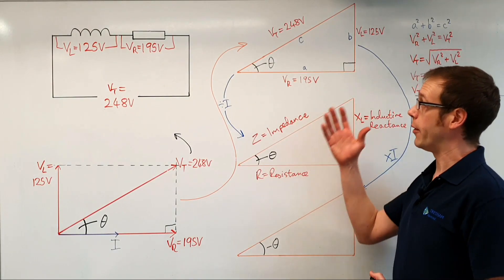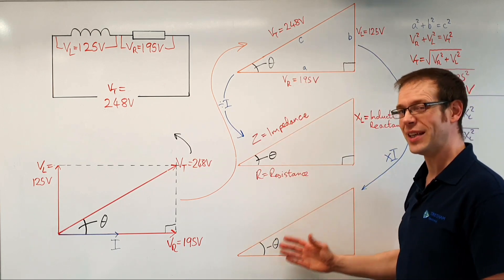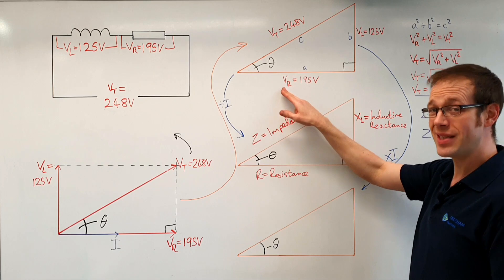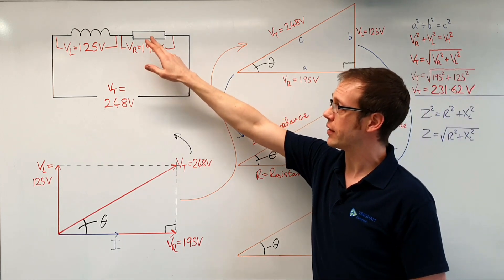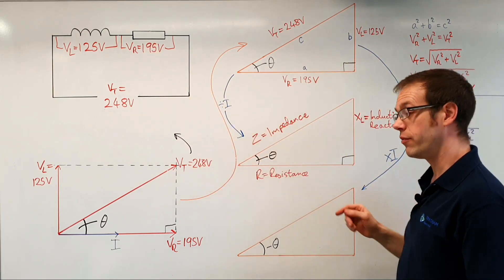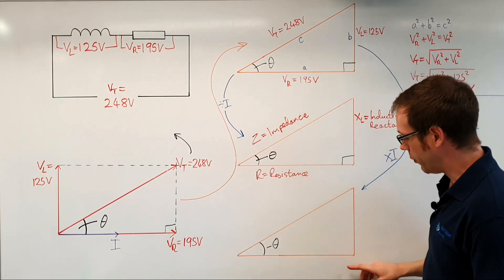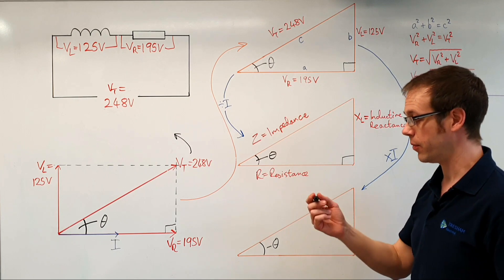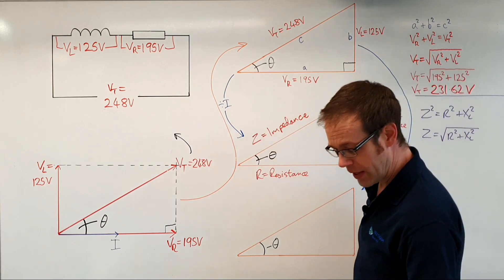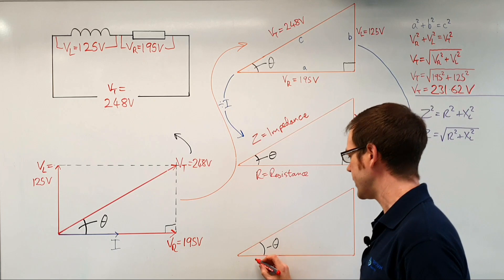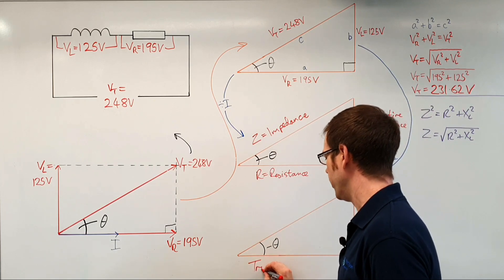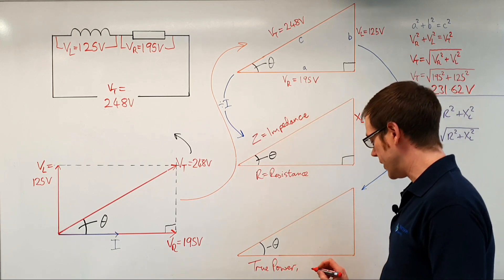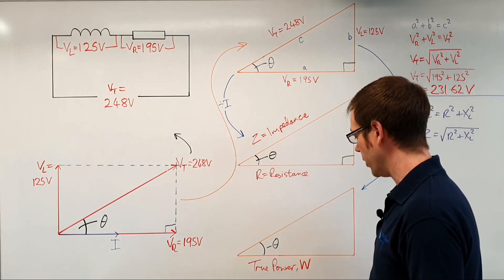Let's think about our triangle and figure out what each side represents. If we take the voltage across the resistor and multiply it by the current flowing through that resistor, it will tell us what this side is — and this side represents something that we refer to as the true power of the circuit. We give that the unit symbol capital W for watts.